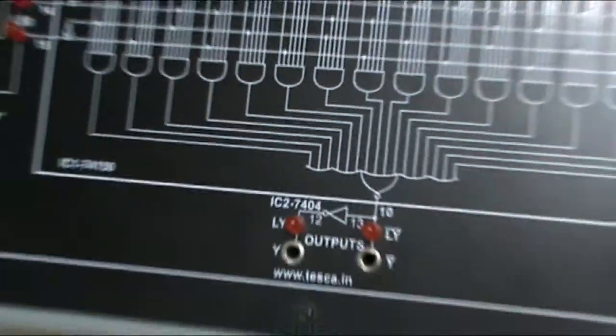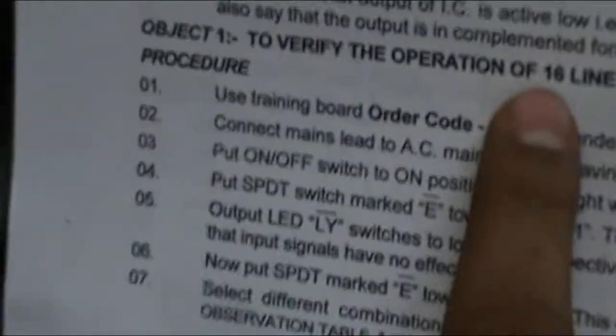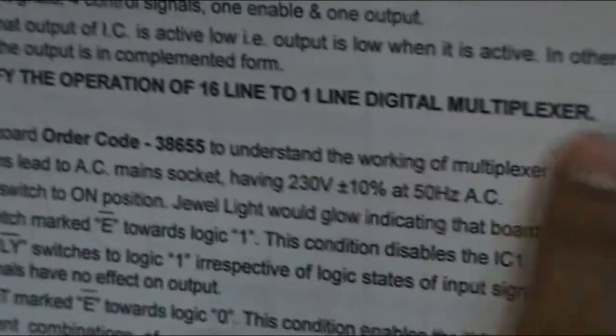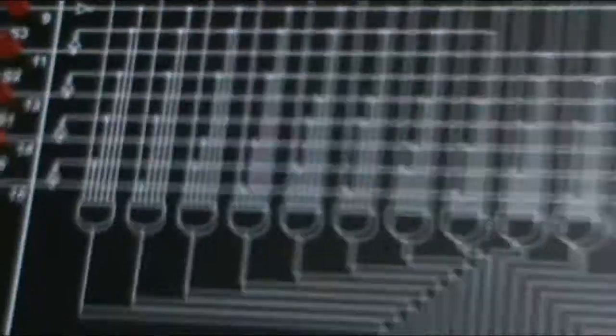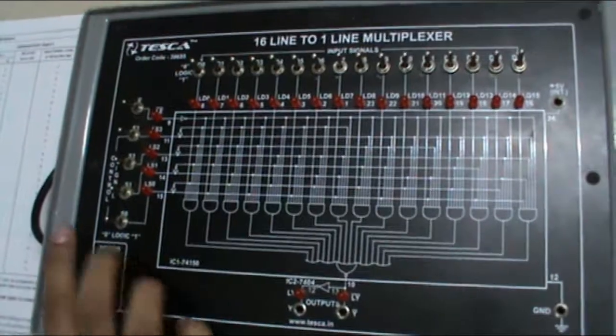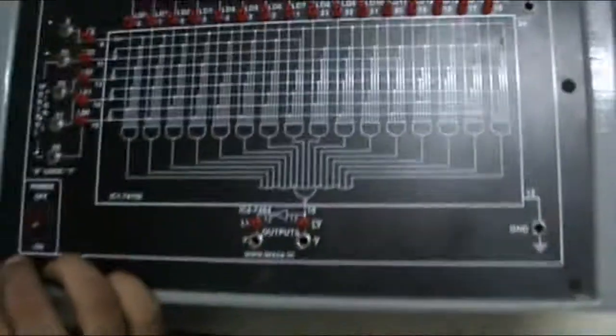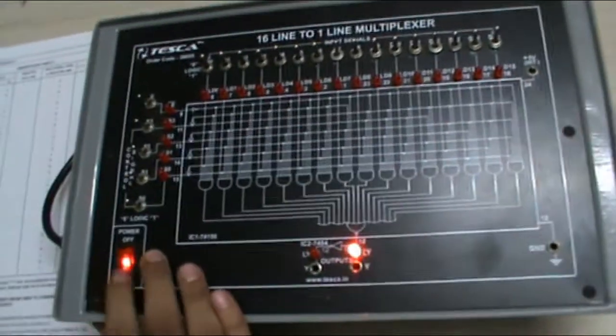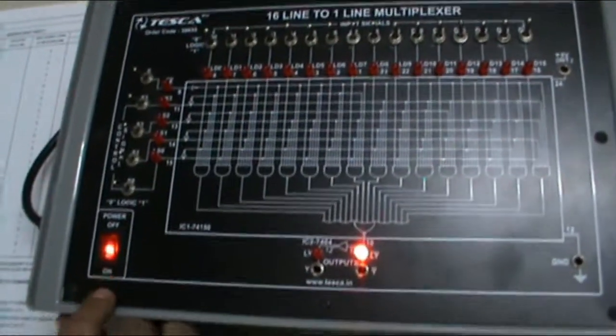Now let me take you to the experiment. Our first experiment is to verify the operation of 16 line to 1 line digital multiplexer. For this, first of all, connect it to the AC mains, 230 volt, with the lead. Now switch on the power supply. The jewel light will glow.